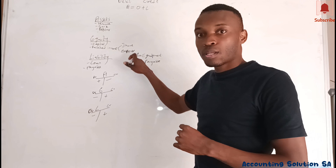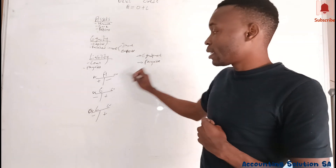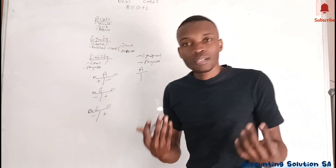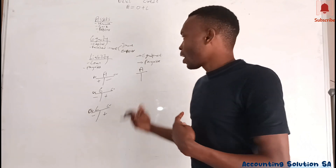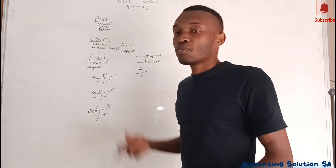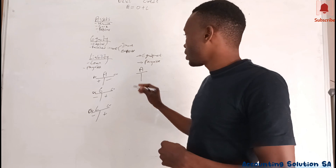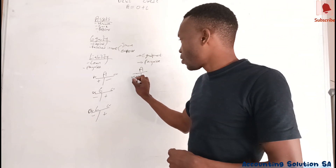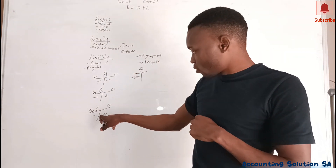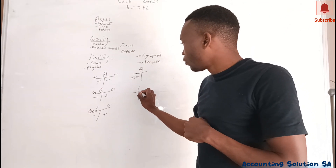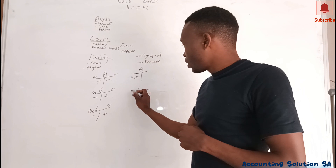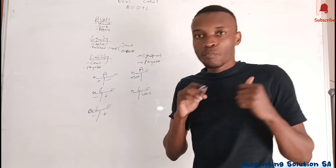Now we apply the principle of debit and credit. Equipment is an asset, so the asset account is going to be affected. Ask yourself: is this equipment going out or coming into the business? It's coming in, so the asset is going to increase — which means 500 goes on the plus side, the debit side. Now for payables, payables is a liability, so we use the liability account, and 500 goes on the credit side, which is also a plus for liability.